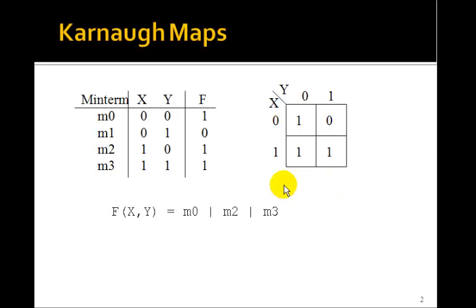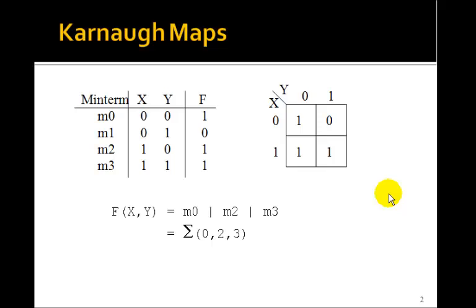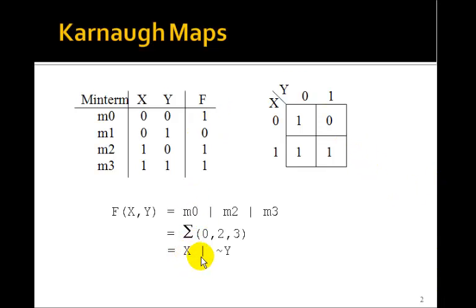I can write the sum of products of this function as the sum of M0, M2, and M3. We'll use a shorthand notation — sum of 0, 2, and 3 — meaning min term 0, min term 2, min term 3. So it's these three terms.